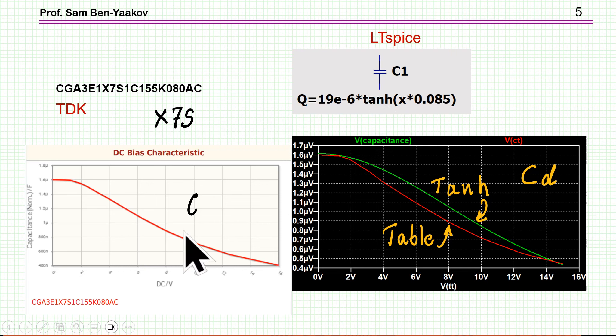Here is what is given in a datasheet. This is for one particular capacitor that I'm going to explore later on and use in the examples. It's an X7S capacitor. It's a 16 volt maximum voltage specified. You see, it starts with 1.5 microfarad. And then it goes down to 400 nanofarad, quite a bit.